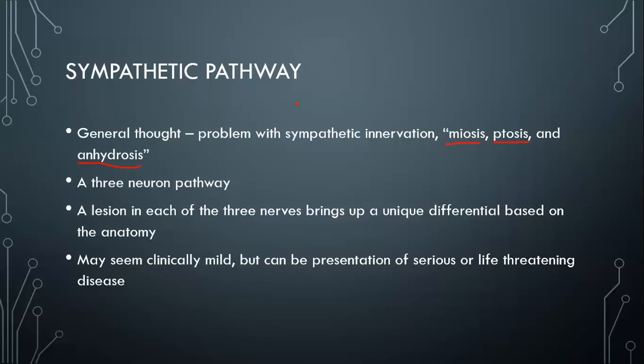The first sign is miosis. You'll see anisocoria — a difference in pupil size. The side that lost sympathetic innervation will be smaller because it's lost innervation to the dilator pupillae muscle, but it still has the parasympathetically controlled sphincter pupillae muscle making the pupil smaller.